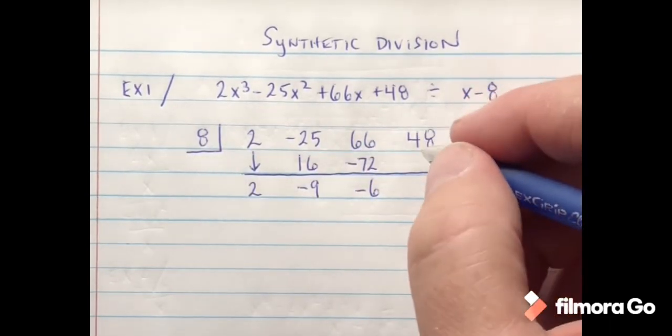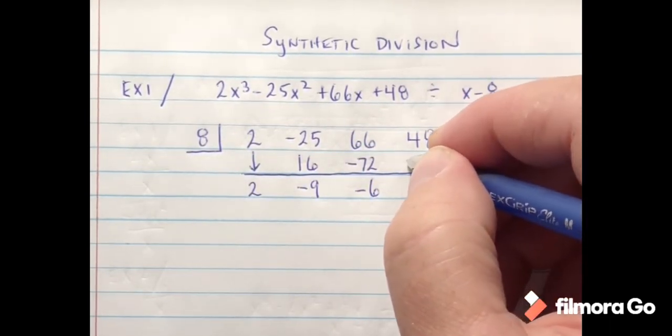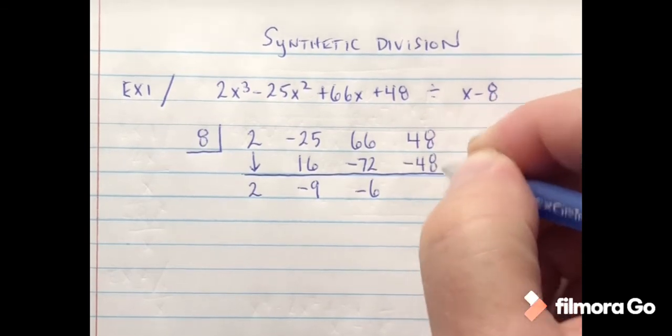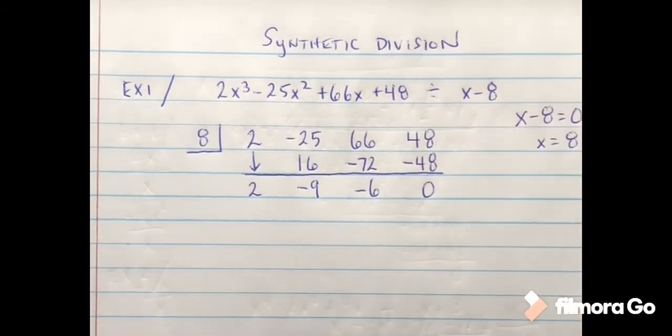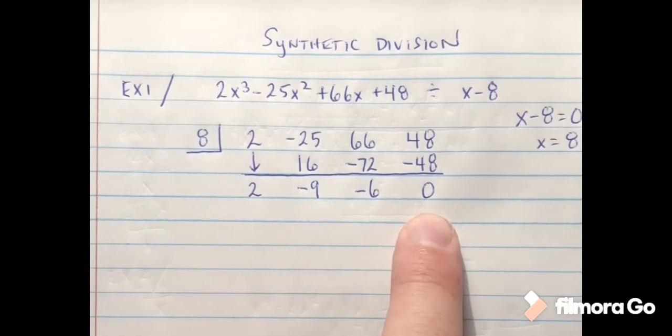Again I'm going to add. That gives me negative 6. And then 8 times negative 6 gives me negative 48, and then that gives me zero.